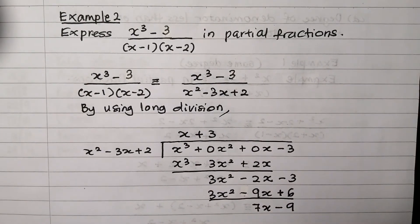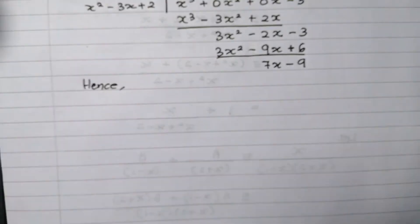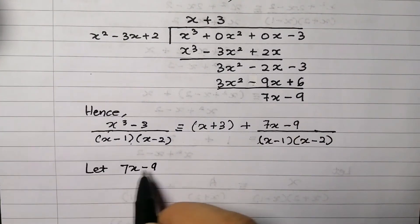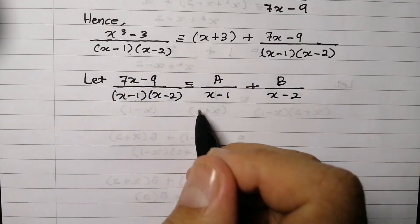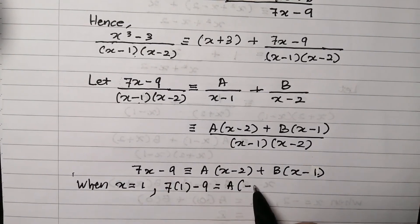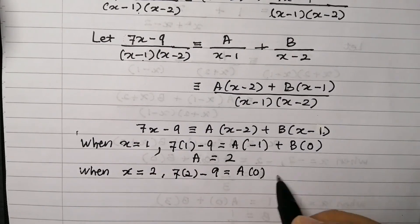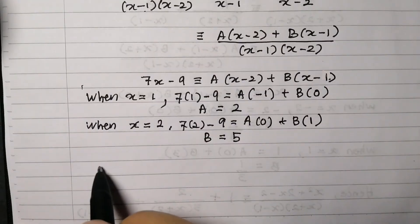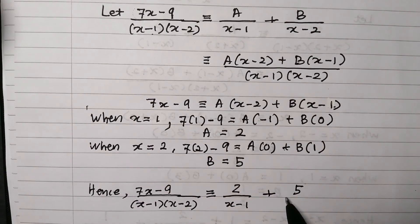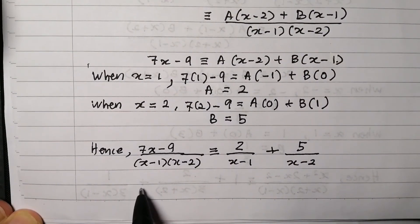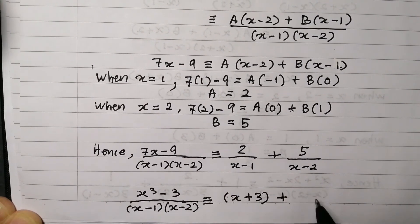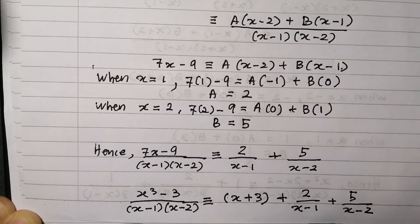From the long division, we express the given rational function using the quotient and remainder. We then write the fraction of the remainder over the given factors and find the partial fractions. Find all constants A and B, then express in partial fraction form. Finally, combine the quotient with the partial fractions to get the full result.